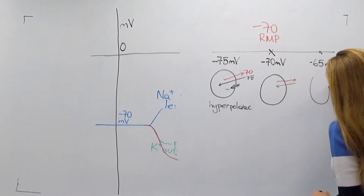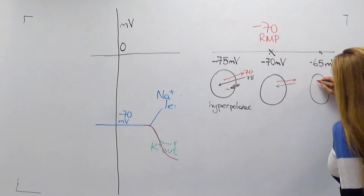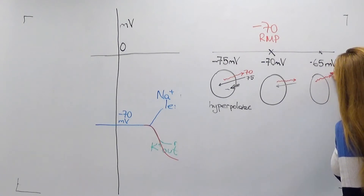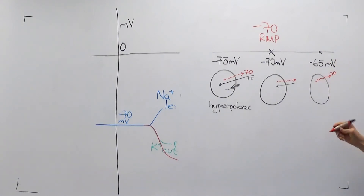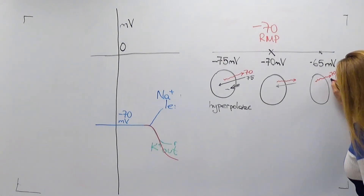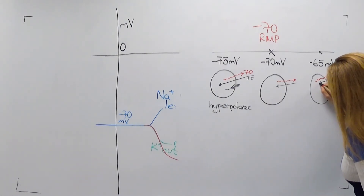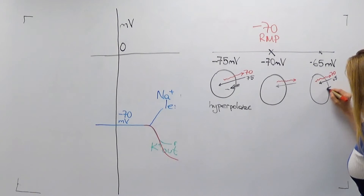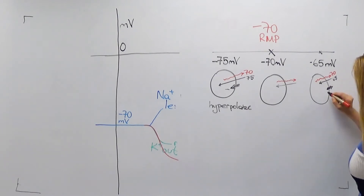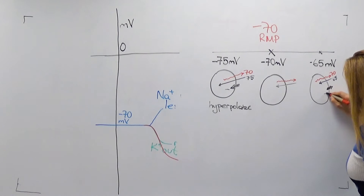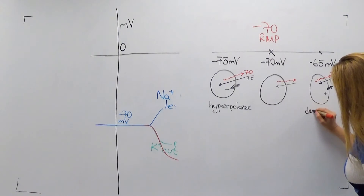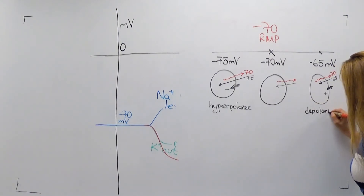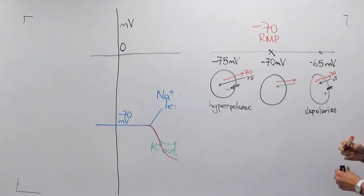The last possibility: the electrical force pushes chloride outward with a force of 70, but this time the concentration force pushes chloride into the cell with only 65. The net force is outward, meaning chloride moves out of the cell, taking negative charges away, making the cell less negative — and in this case the movement of chloride depolarizes the cell.